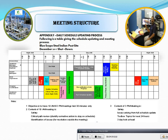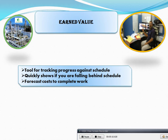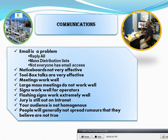Meeting structure: attendance, the daily schedule, updated progress, updated schedule. Meeting progress is tracked. All schedules should be placed in the chart. Use the wall board for tracking progress against the schedule. Forecast the course to complete the work.